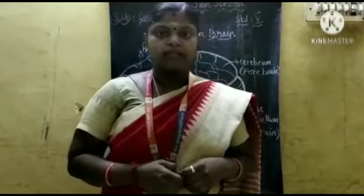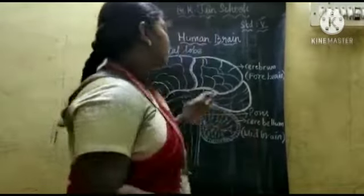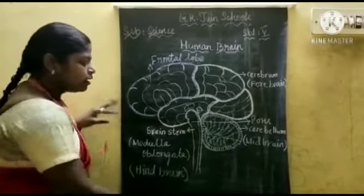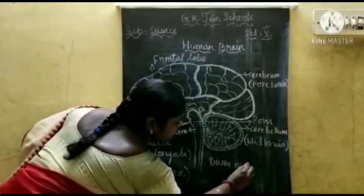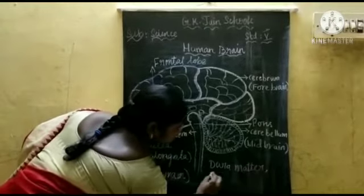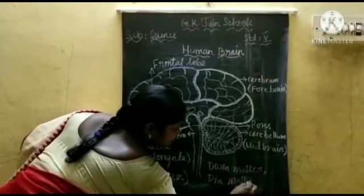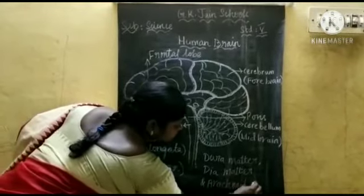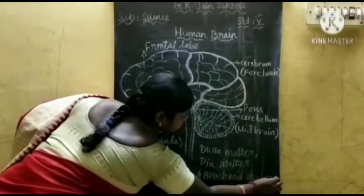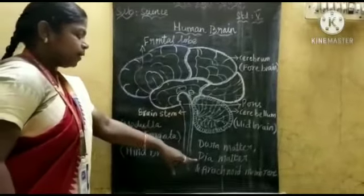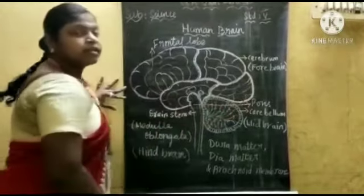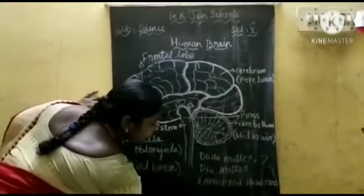We use our brain to think, write and read. Our brain is fully covered with a 3-layer membrane. The names of the 3-layer membranes are Dura mater, Pia mater, and Arachnoid membrane. These 3 membranes are joined together and cover the brain. They are known as Meninges. The names of these 3 layers which cover the brain is known as Meninges.